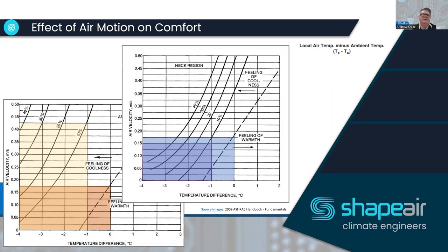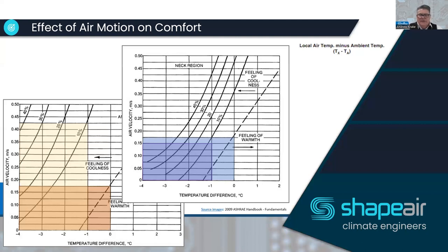It's very critical to control the velocity in the space around the temperature. For example, without changing the temperature, when you turn a fan on you can feel a sensation of coolness — there's no change in temperature, just a change in velocity. The correlation between temperature and velocity is very critical.